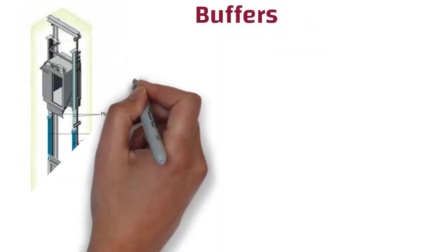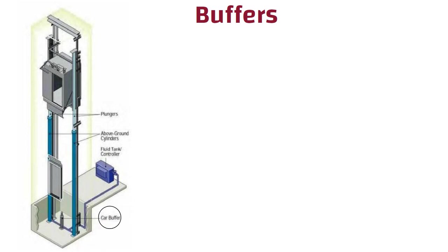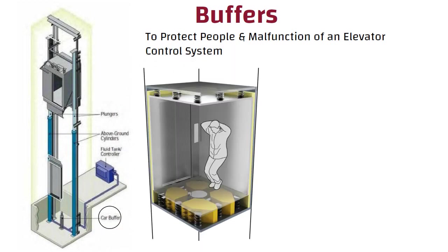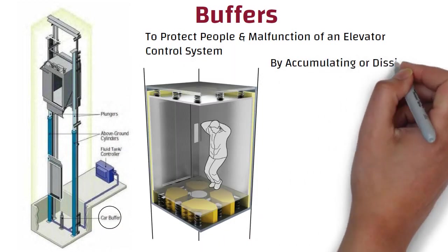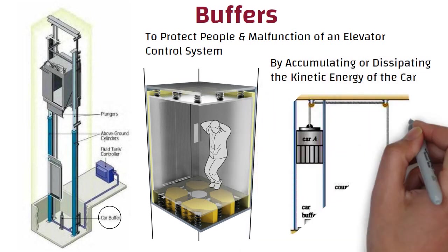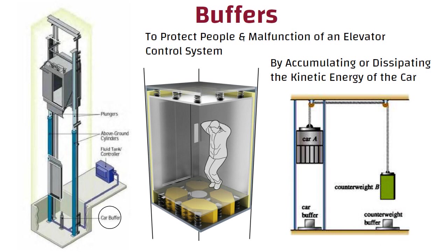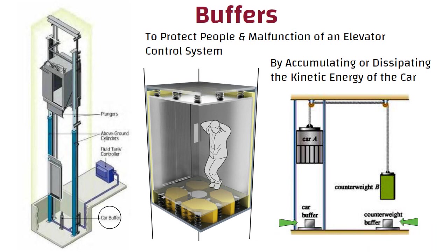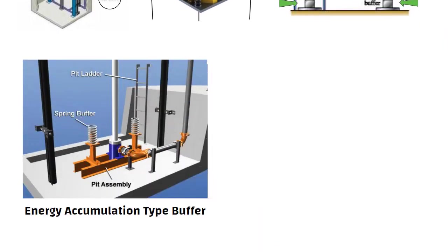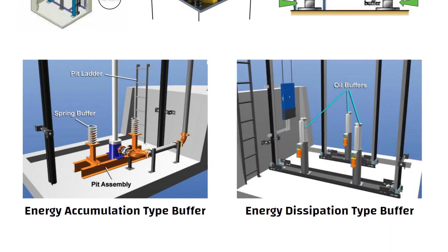Buffers. The buffer is an apparatus located at the bottom of the elevator which is designed to protect people from malfunction of an elevator control system. Buffers can stop a descending car by accumulating or dissipating the kinetic energy of the car. As seen in this picture, buffers may also be fitted under the lift car or counterweight. Buffers can be of two types: energy accumulation type buffer and energy dissipation type buffer.